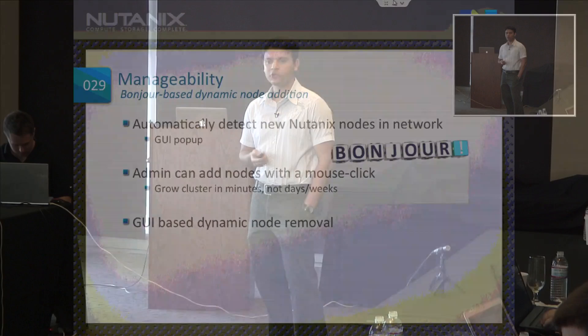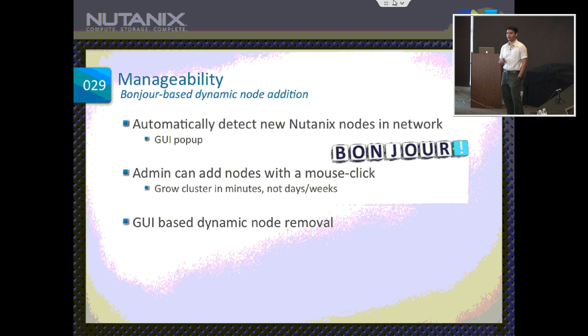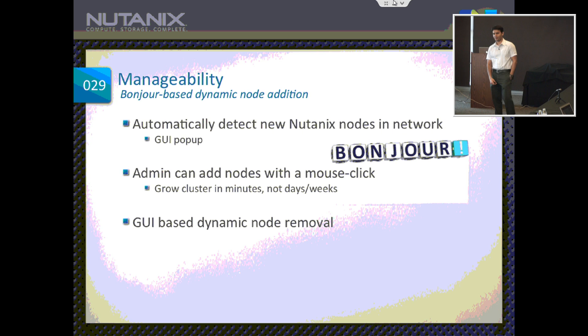The next very interesting manageability feature is dynamic addition of nodes. We use Apple's Bonjour protocol — zero configuration. When a new node is added to the network, the existing cluster figures out there is a new Nutanix node and shows a pop-up on the GUI. The admin just says yes to add it. When a new system is configured from scratch, everyone recognizes each other, and a pop-up asks whether to form a cluster from the new nodes. Once it's part of the system, MapReduce runs, figures out there are empty disks, and starts migrating data — it automatically balances.